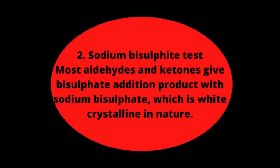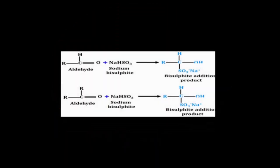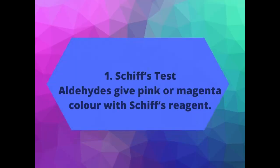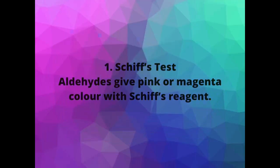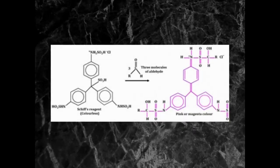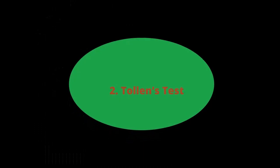The second test for carbonyl groups is the sodium bisulfite test. When sodium bisulfite is added to an aldehyde or ketone, it gives a white color precipitate. Schiff's reagent test can also be used — when Schiff's reagent is added to aldehydes, it gives a magenta color.